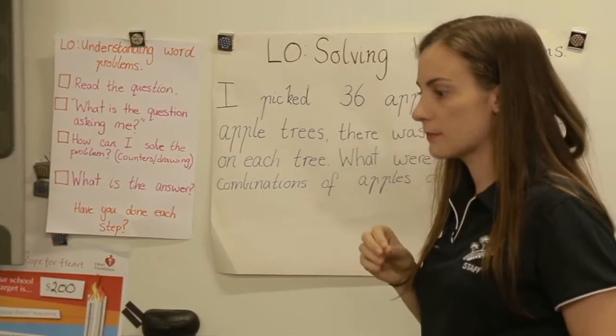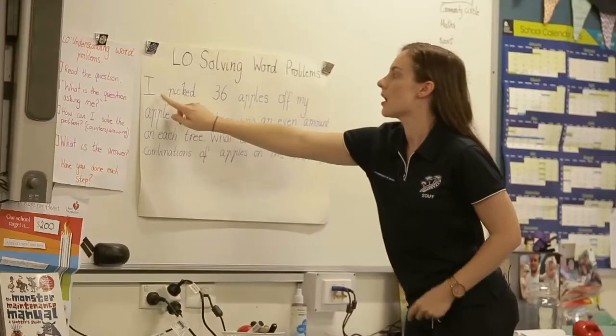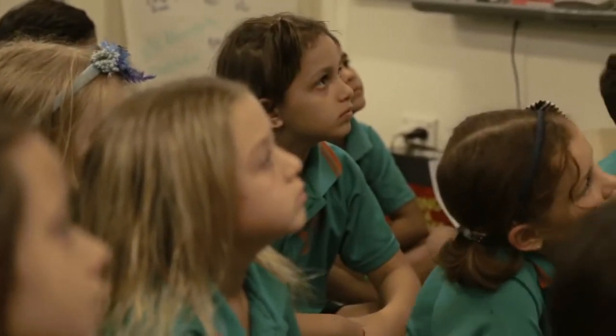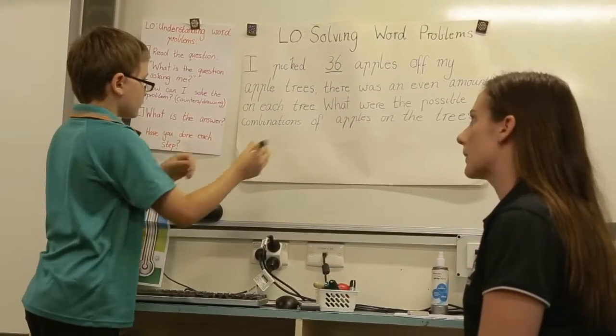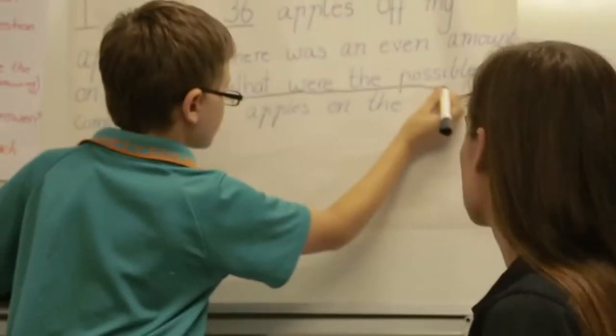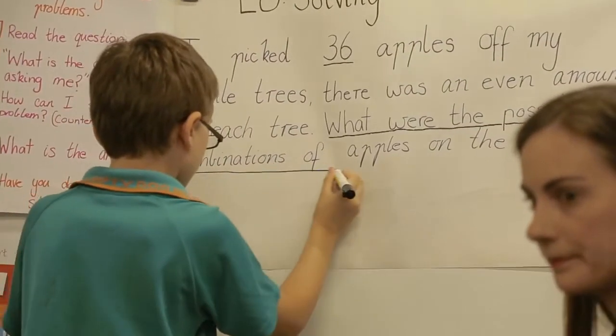Newman's analysis is the understanding of how children read and decode a problem. They need to ask themselves, do I understand what this problem's asking me? What is it asking me to do? Then they need to pull out the mathematical part of that word problem and transfer it into some form of a sum, and then they need to decode it.